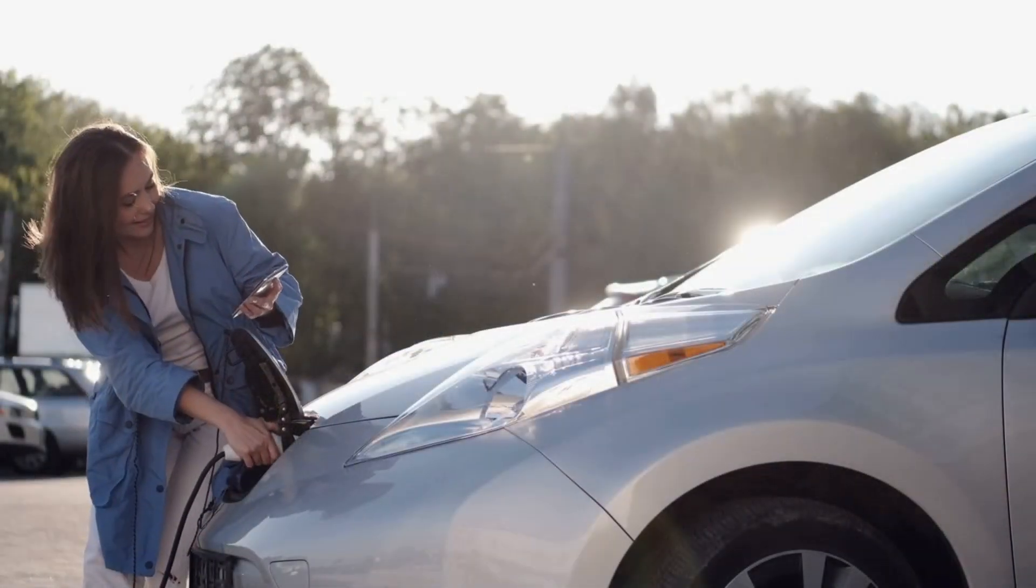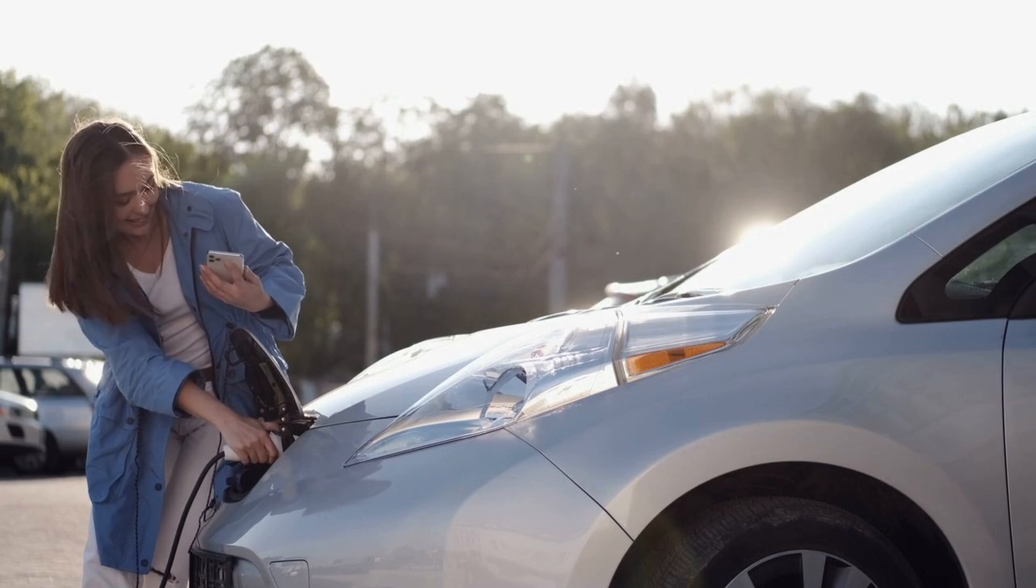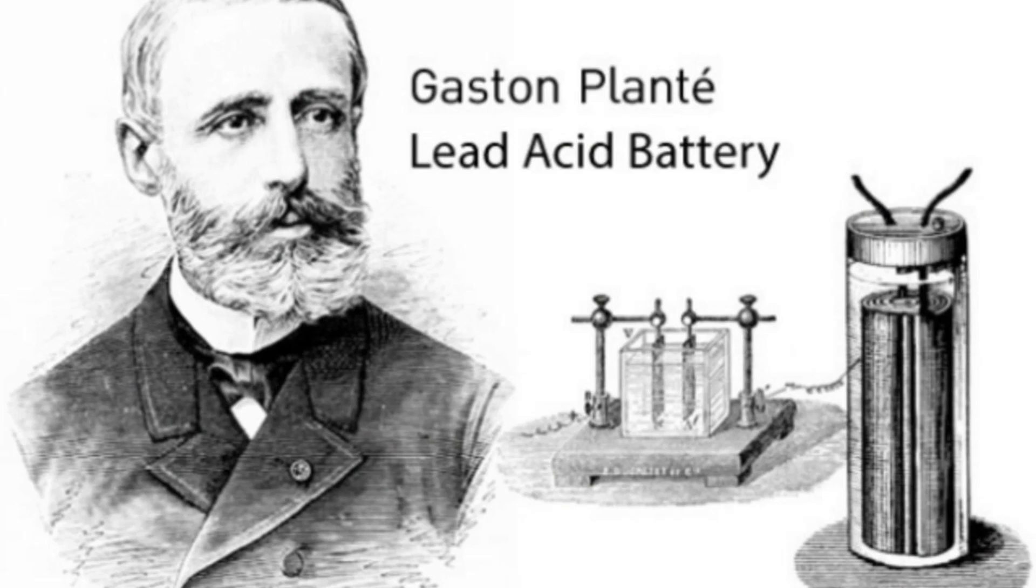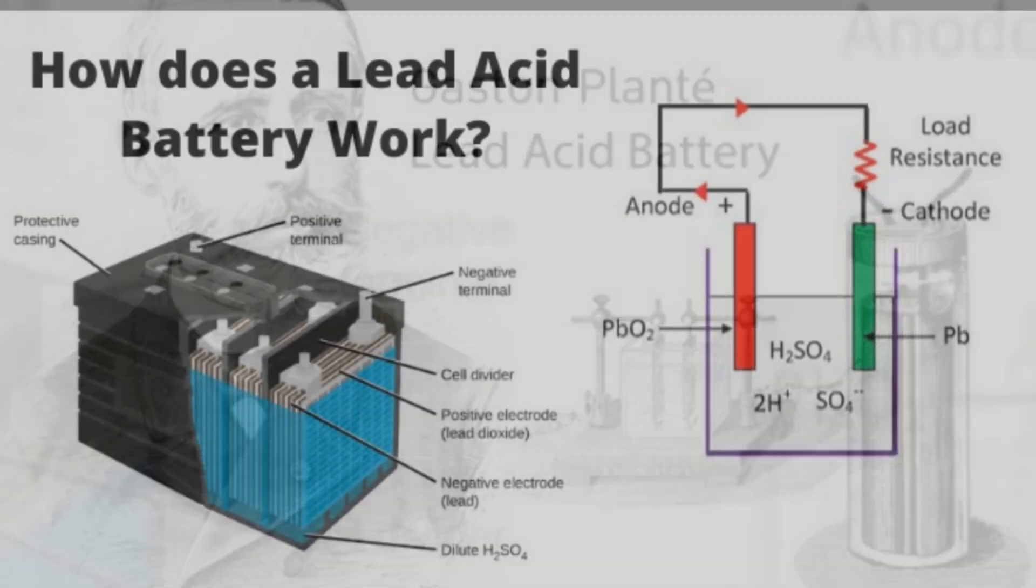A lead-acid battery is a type of rechargeable battery that uses lead and sulfuric acid to store electrical energy. It's a tried-and-true technology, having been invented in the mid-19th century and still widely used today. But how does it work?